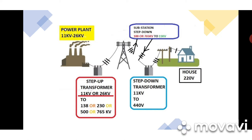From there it goes to the substation, where they again reduce the voltage — step down — from 180 kV to 765 kV, whatever voltage comes in, they step it down to 11 kV. Again from the substation, it comes to your street, where there is a transformer that steps down from 11 kV to 440 volts for home use.